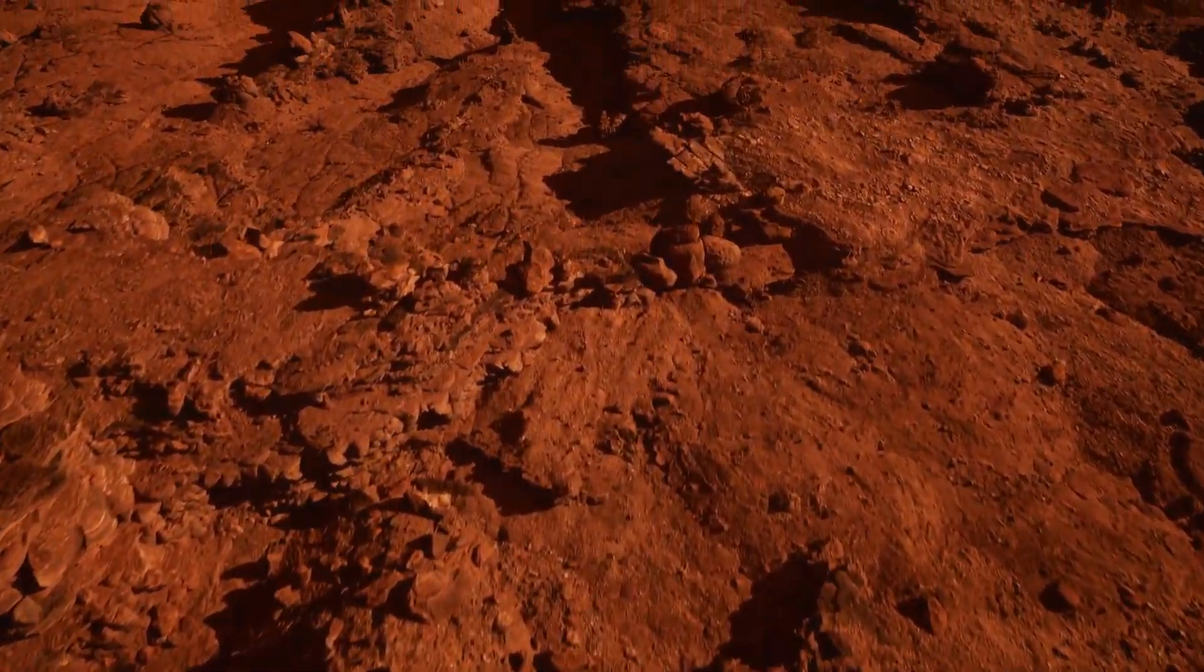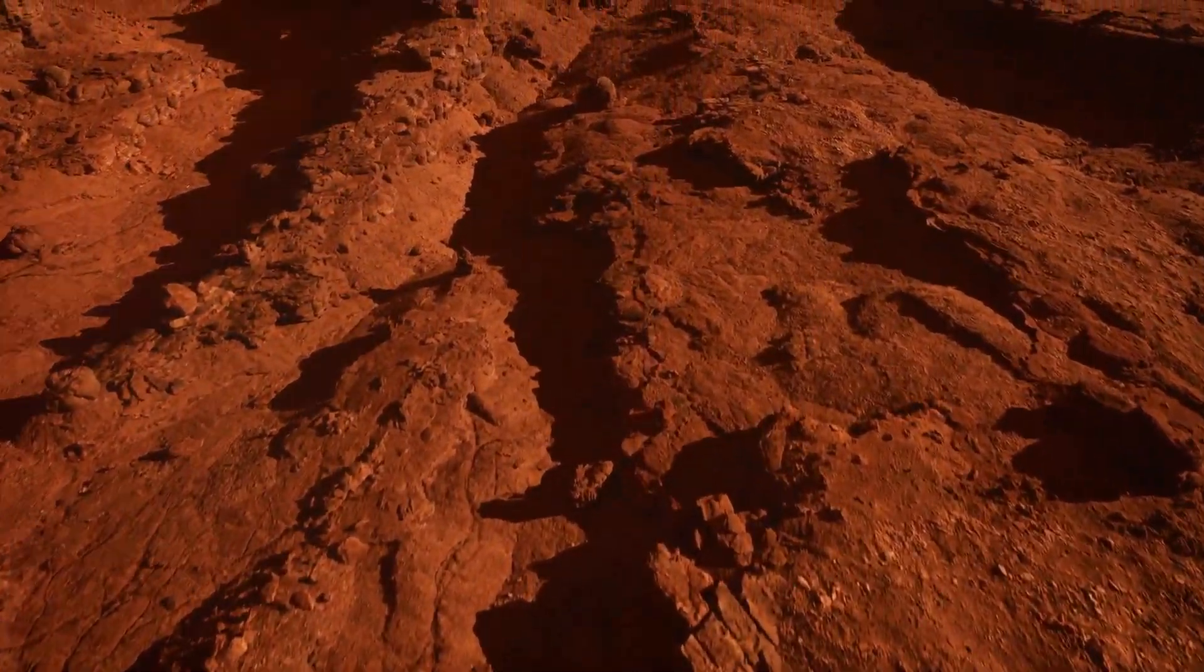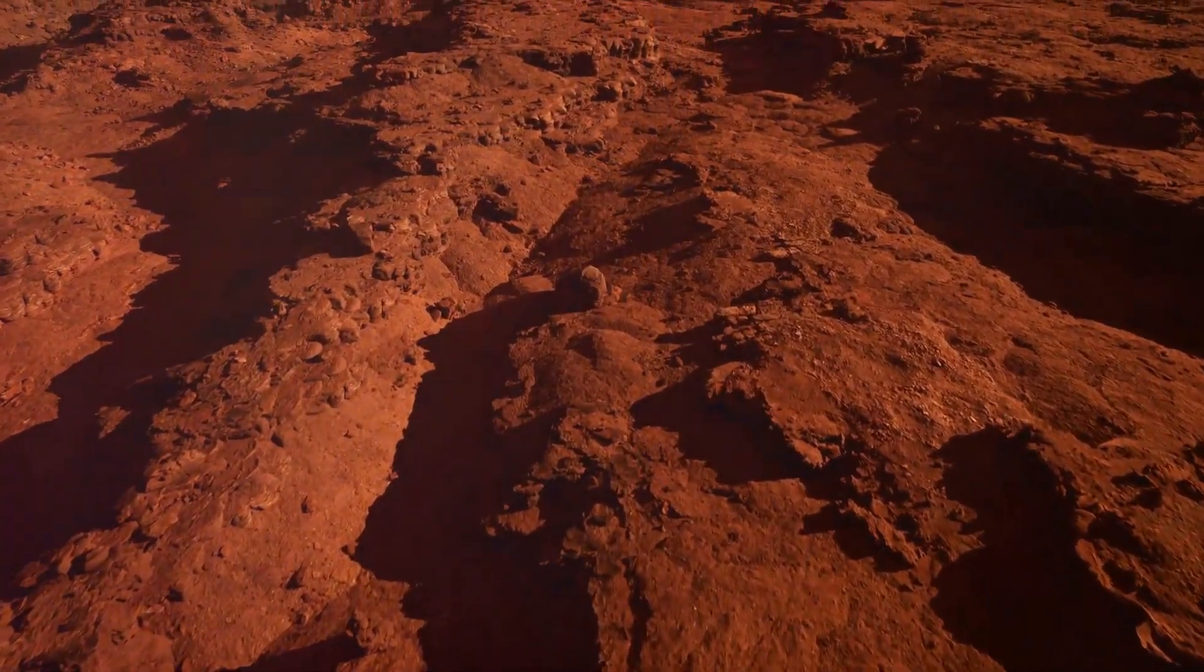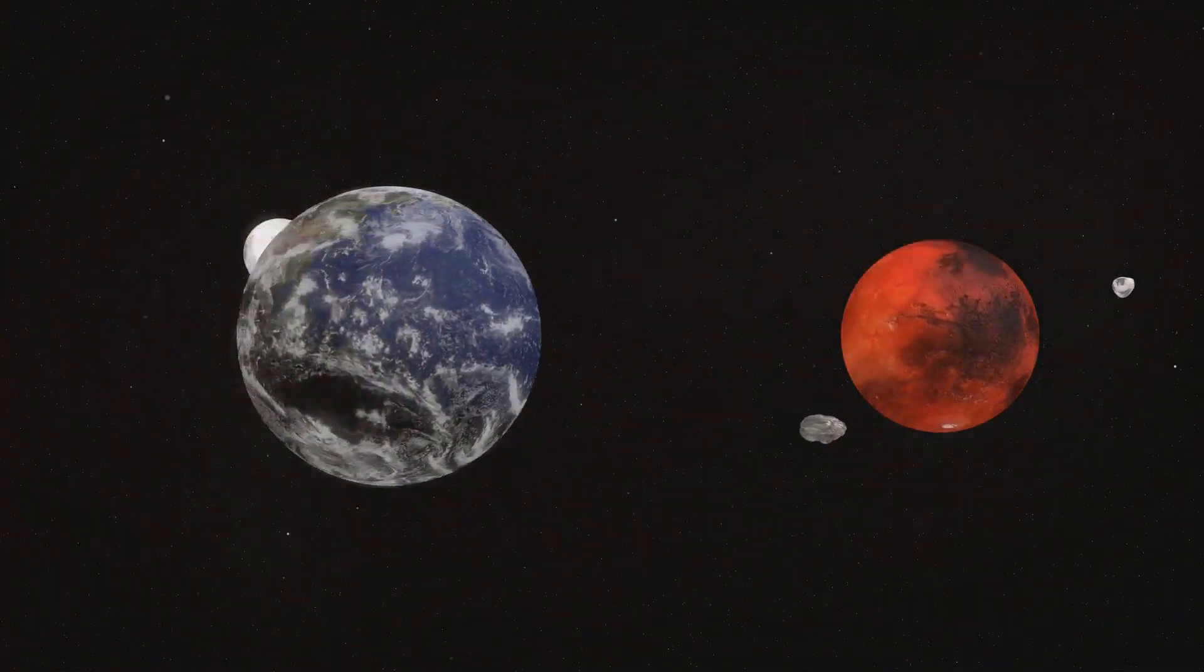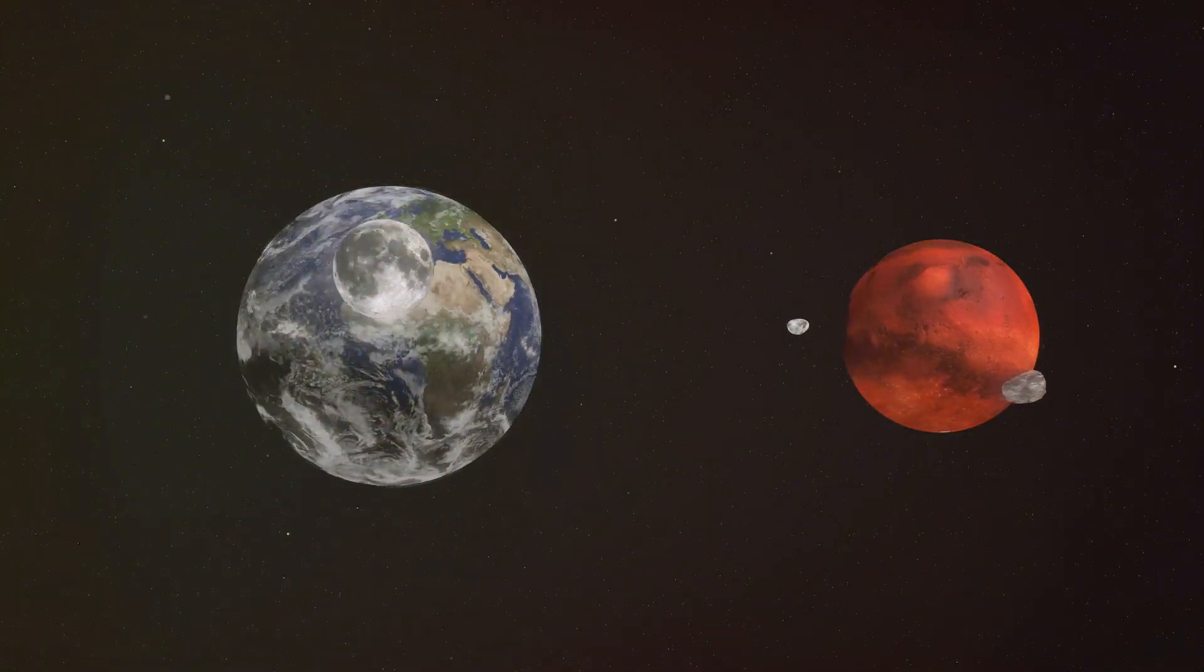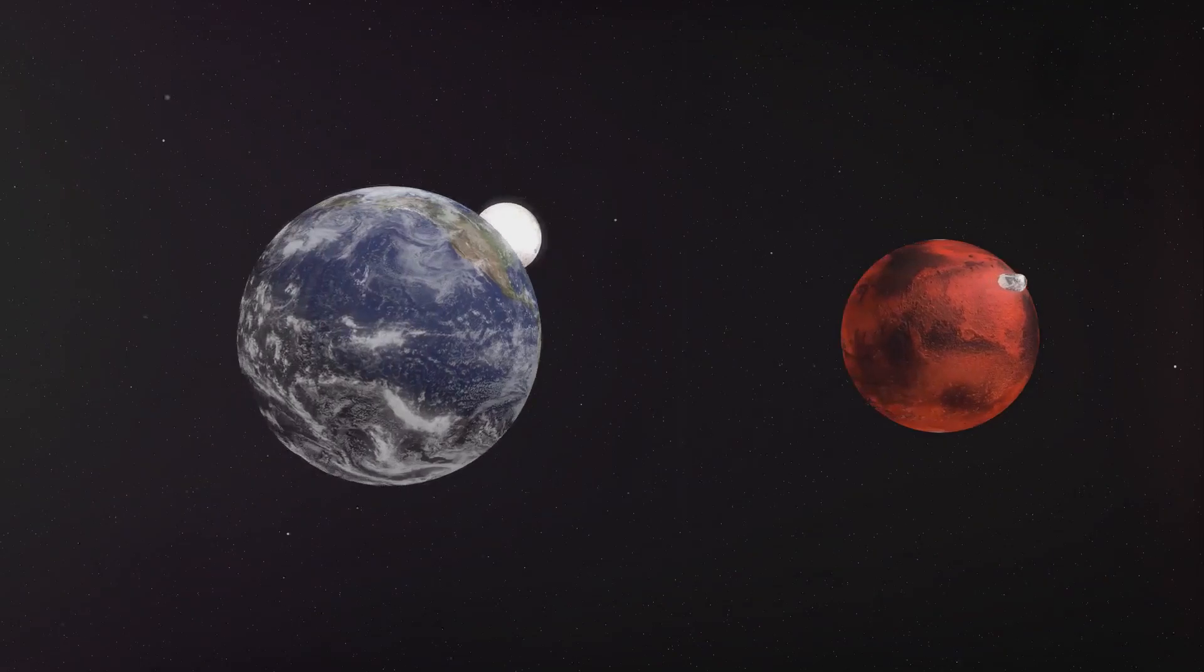The red planet, with its desolate landscape and thin atmosphere, could be our home billions of years into the future. As Earth ages, its once thriving ecosystems may wither, its atmosphere thinning until it resembles the barren world we see when we gaze upon Mars. A chilling thought, isn't it?